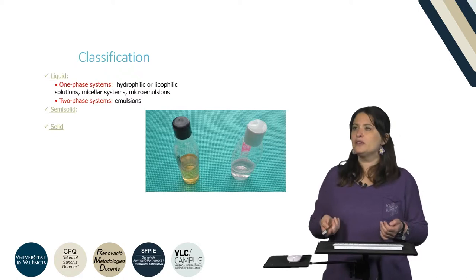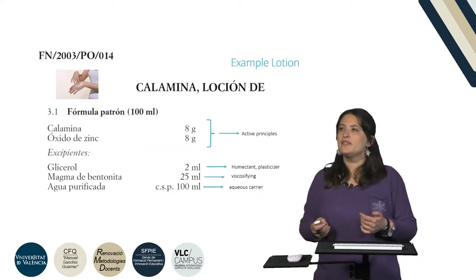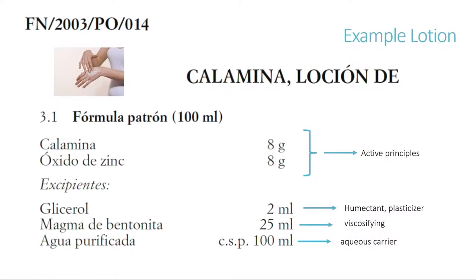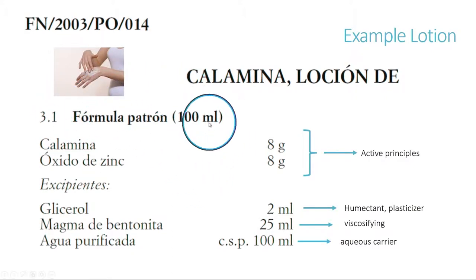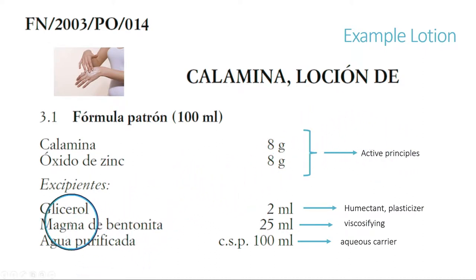We also have the semi-solid and solid formulations. Here we have an example from the Spanish national formulary of a lotion — the calamine lotion — with a formula for 100 milliliters. It contains calamine and zinc oxide as the APIs, and as excipients we have glycerol, bentonite magma, and purified water.